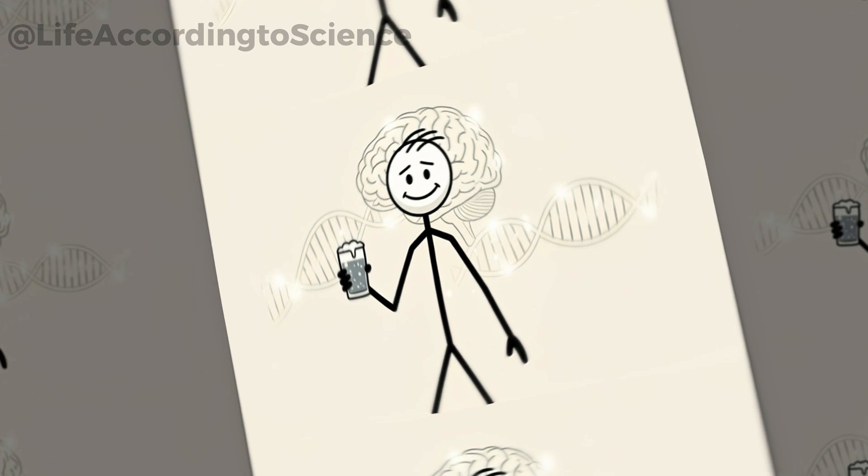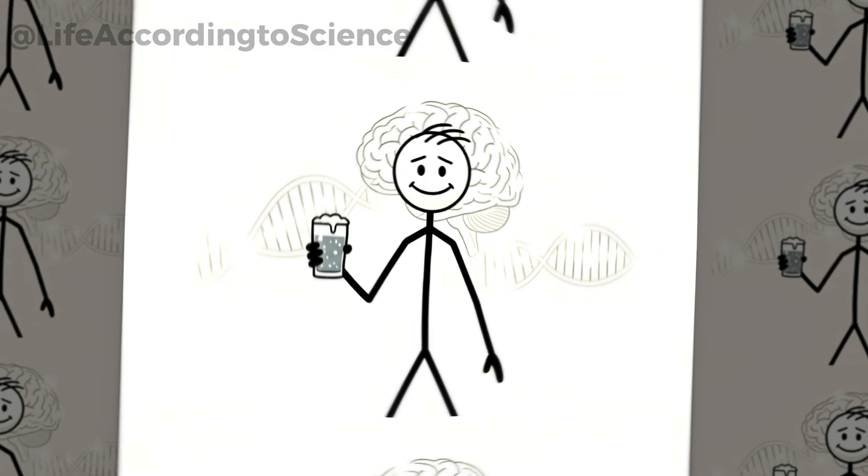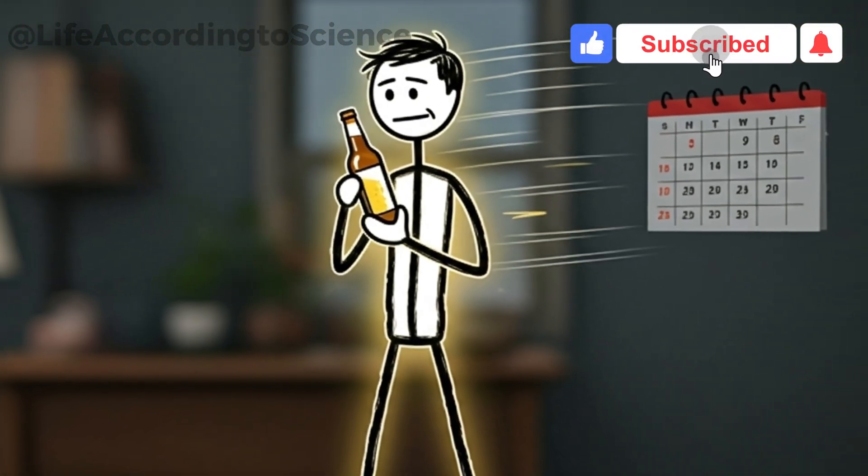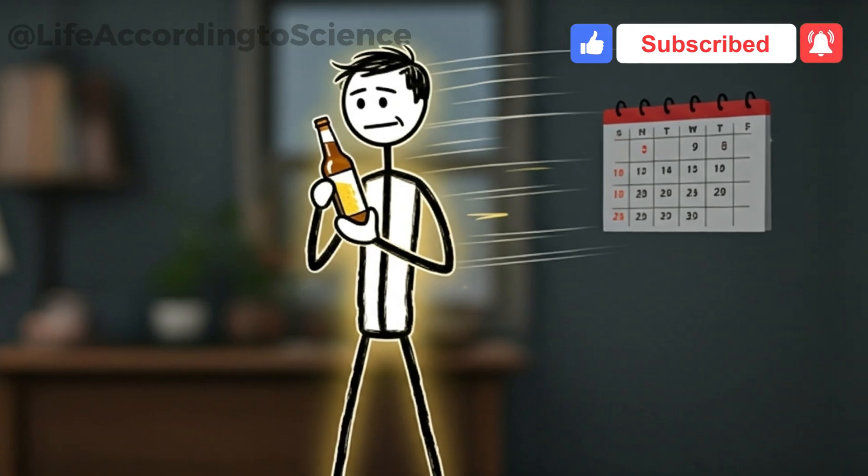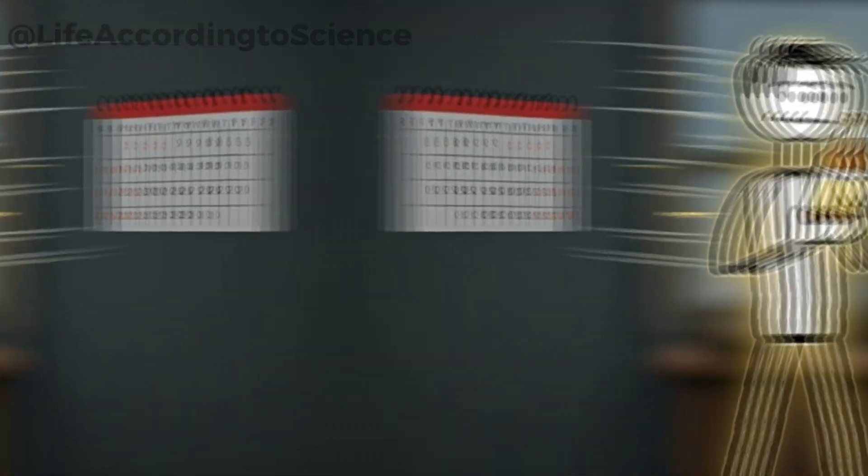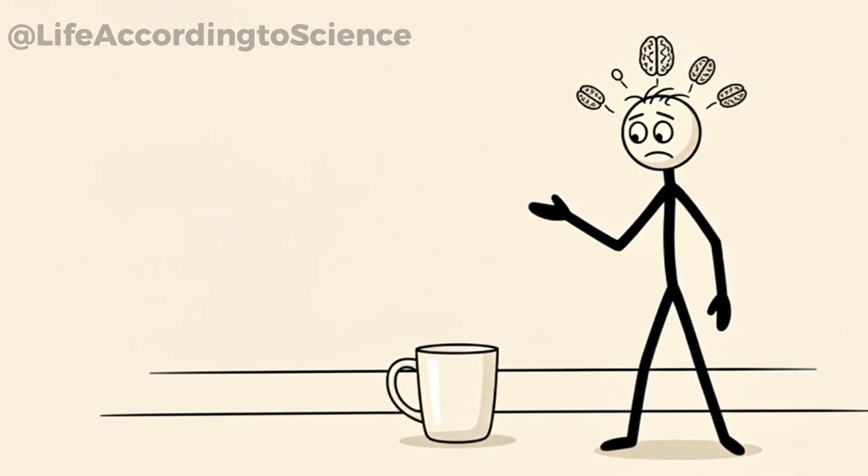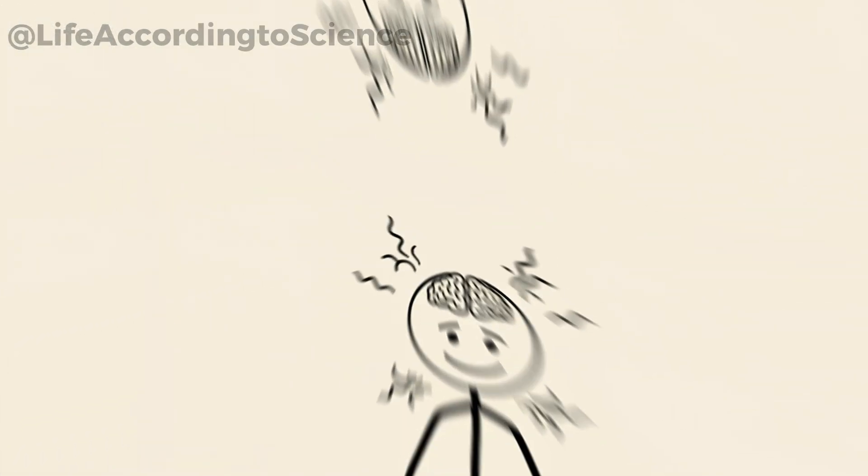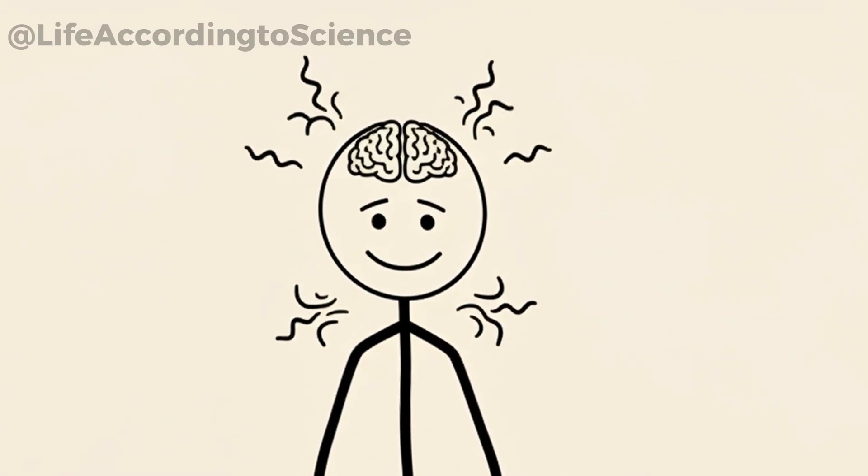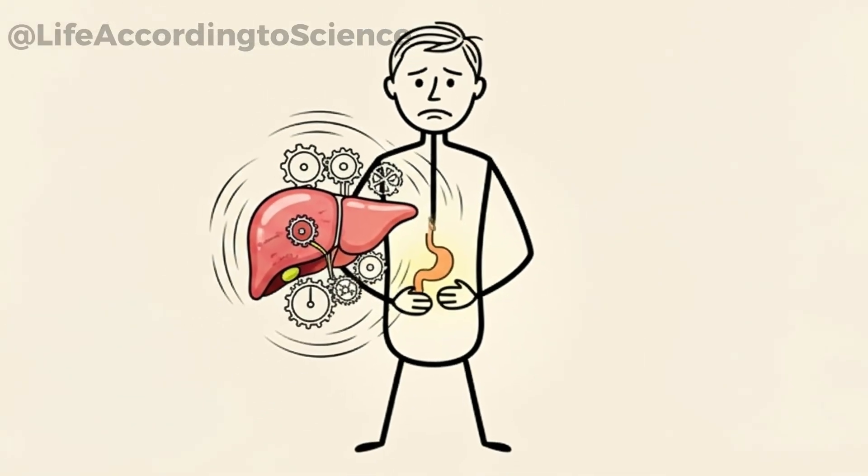A single beer may seem trivial, but science is clear. Repeated exposure rewires both the brain and the body. By the end of the first week, tolerance begins to build. The same amount of beer no longer delivers the same buzz, pushing many to crave more. This adaptation happens because your brain's receptors adjust. The dopamine reward becomes weaker over time, leaving behind more of the negative side effects without the same pleasure. It's a classic case of diminishing returns.